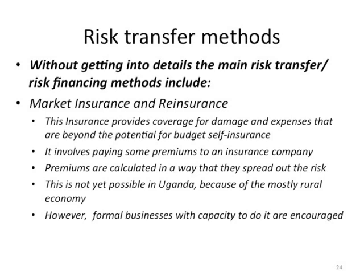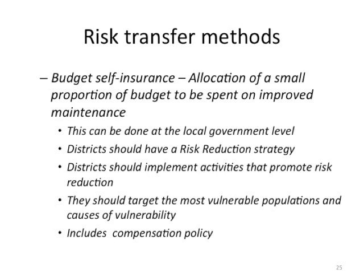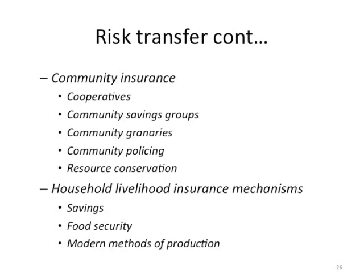Risk transfer mechanisms also include budget self-insurance, where a small proportion of the budget is allocated for improved maintenance. This can be done at local government, agency, and even household levels. It also includes compensation policies that should target the most vulnerable populations and causes of vulnerability. Community insurance includes cooperatives, community savings groups, community granaries, community policing, and resource conservation — a viable mechanism of risk transfer in resource-constrained countries and societies.